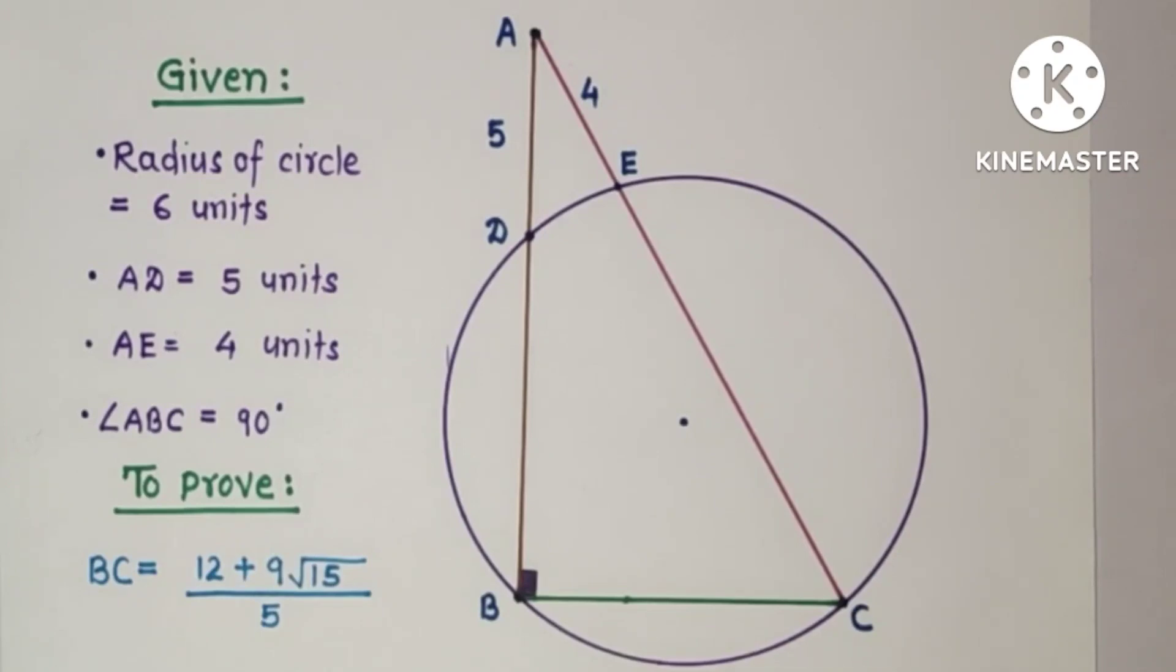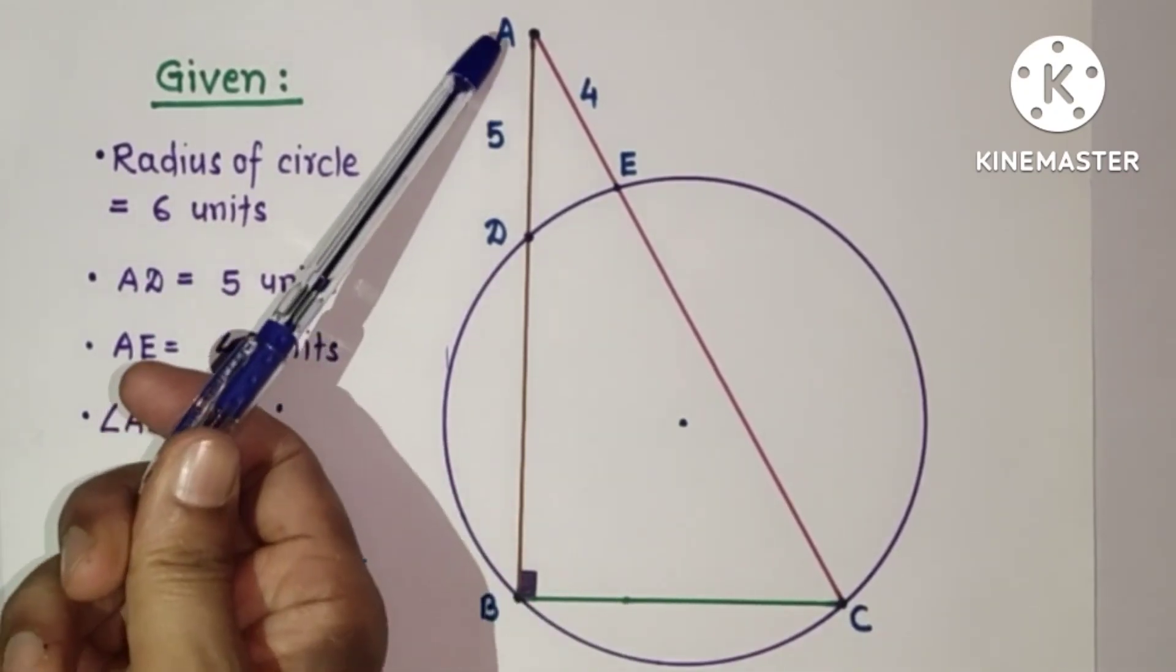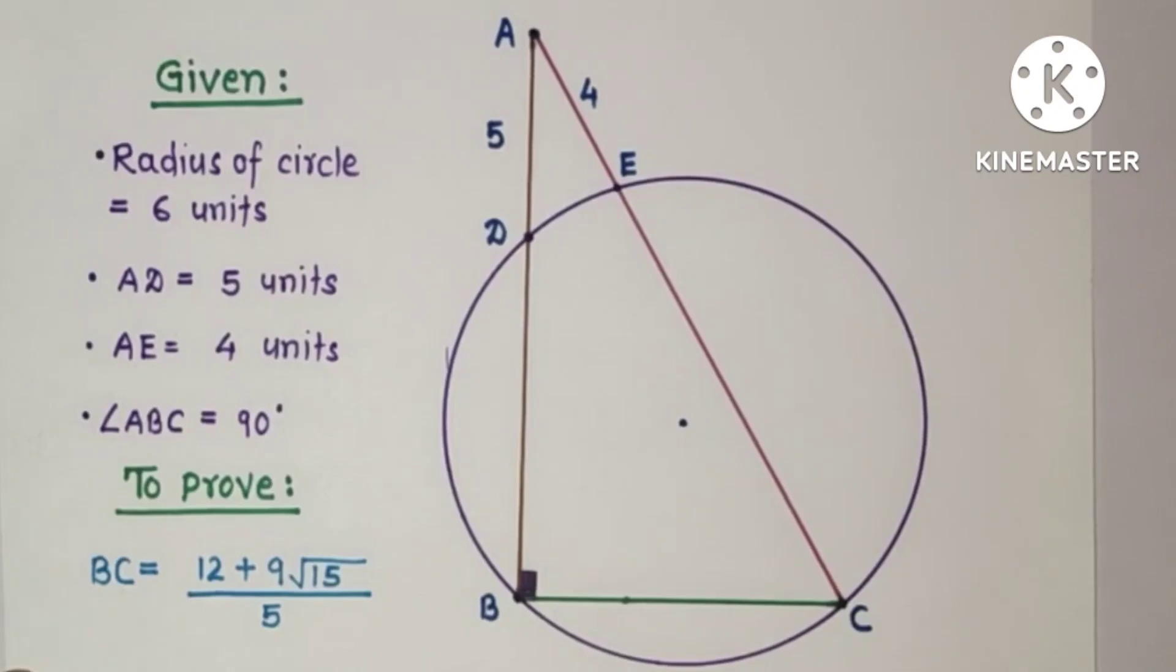Hello friends and viewers, in this geometry problem we are given a circle of radius 6 units, length of AD is 5 units, and length of AE is 4 units.